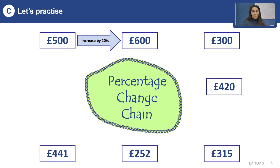Let us practice now. You can see percentage change on your screen. Please, pause the video and try to identify how exactly these numbers have been changed. For instance, in order to go from 500 pounds to 600 pounds, you have to increase the former by 20%. So, in order to go from 600 pounds to 300 pounds, what should be done?